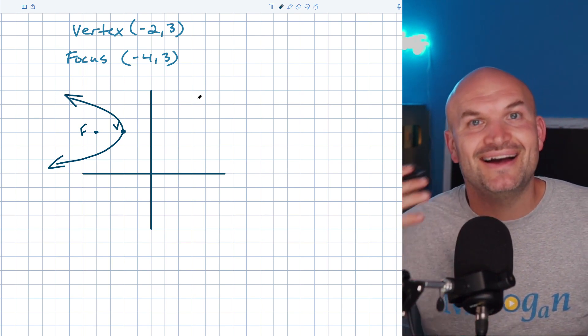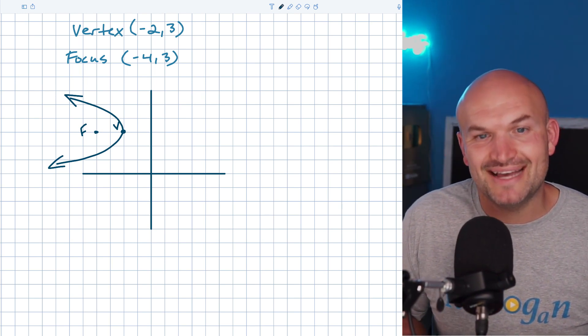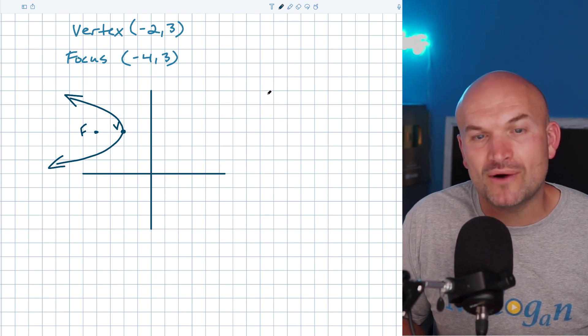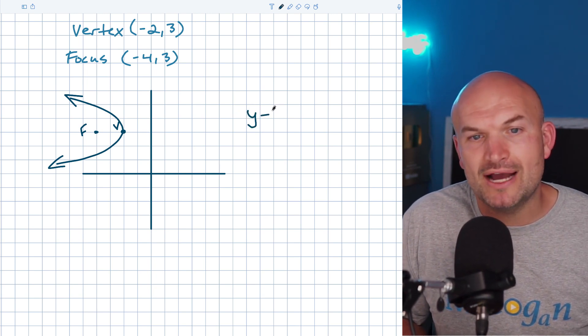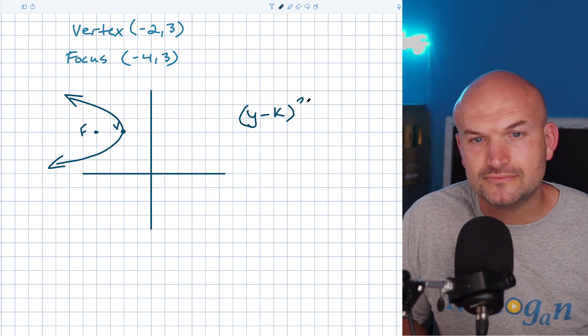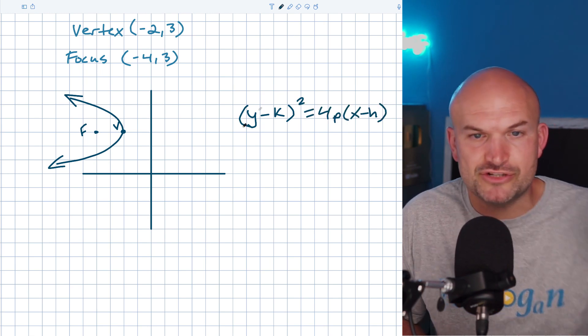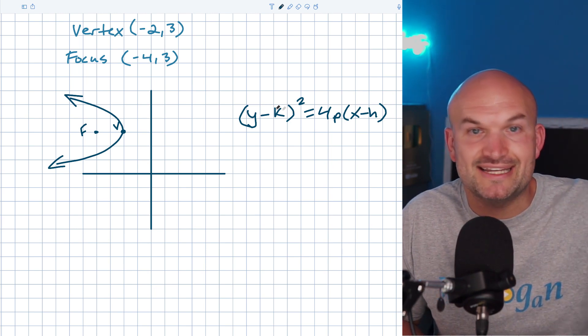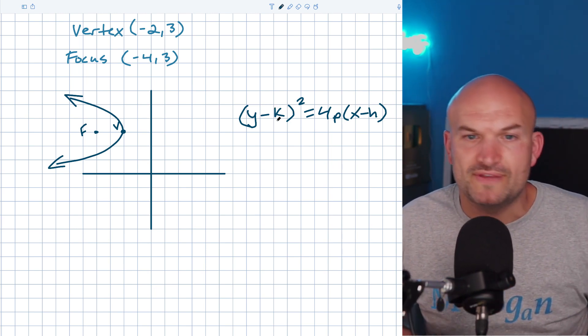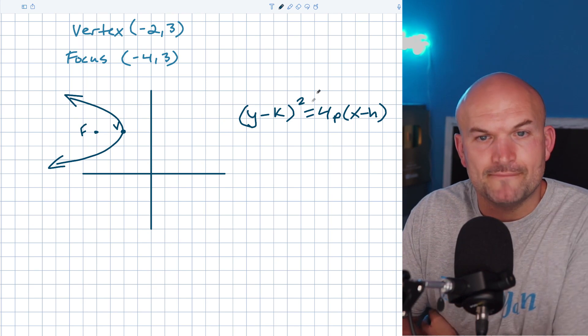The general equation here for a horizontal parabola is going to be (y - k)² = 4p(x - h). Just remember always H is with X and K is always with Y. That's a very important thing. Students still kind of get that mixed up there.